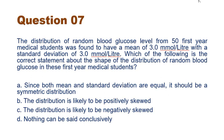The next question: the distribution of random blood glucose levels from 50 first-year medical students was found to have a mean of 3 with a standard deviation of 3. Which is the correct statement about the shape of the distribution? We cannot say anything about symmetry on the basis of mean and SD alone, and we cannot comment on positive or negative skewness. The correct answer is option D: nothing can be said conclusively.